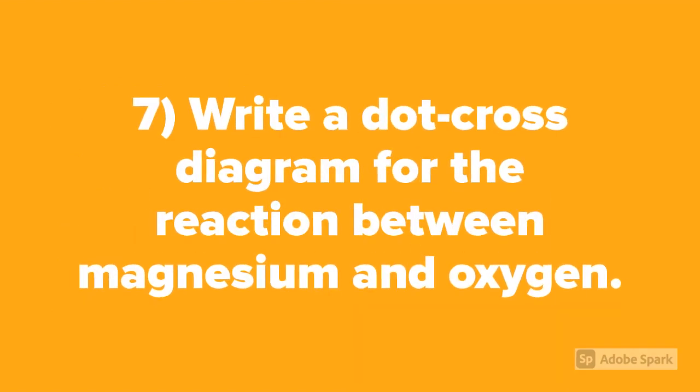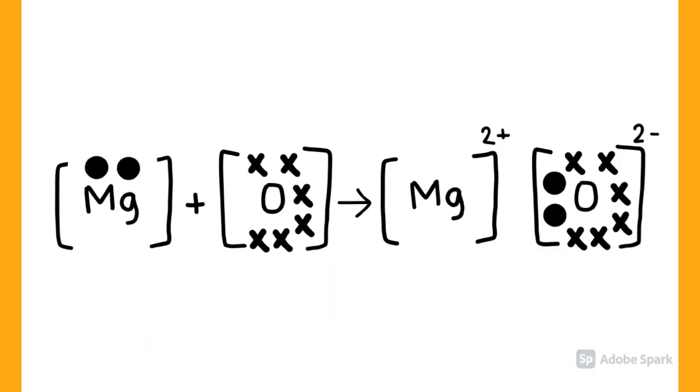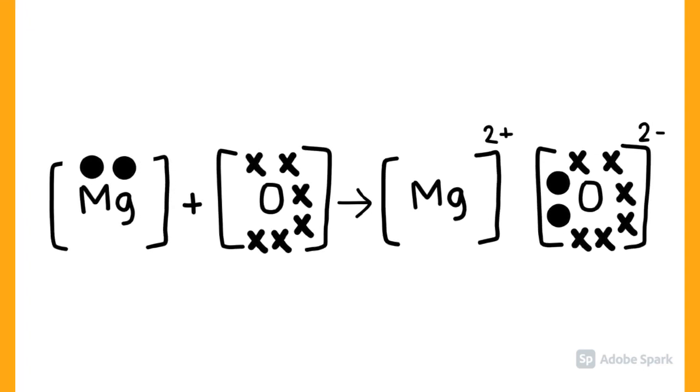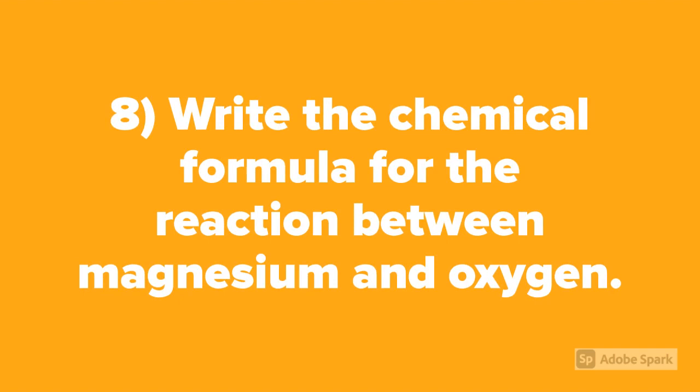Question number 7: Write the dot cross diagram for the reaction between magnesium and oxygen. Question number 8: Write the chemical formula for the reaction between magnesium and oxygen.